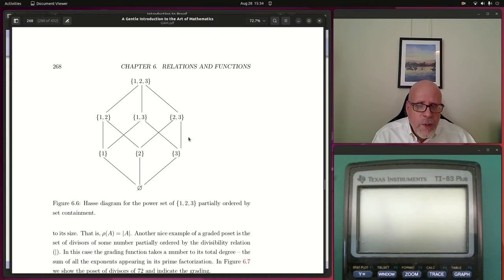If you notice the geometry of this, you may not see it at first because it looks like a hexagon, but it also looks like a cube kind of turned on its corner. The empty set and the set one, two, three would be at diagonally opposite corners of a cube like that. What is the grading function here? It's fairly obvious if you look at it. The grading function is the cardinality of the sets, how many elements are in them.